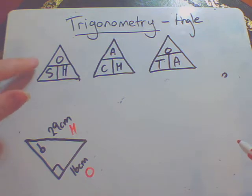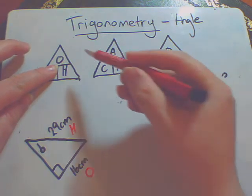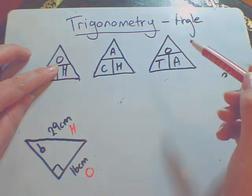So looking at my triangles, I can see that it's going to be the sin triangle. And again, I'm trying to find the angle. So I'm going to cover up the S this time because I know what O and H are. And it's telling me to do the opposite divided by the hypotenuse.